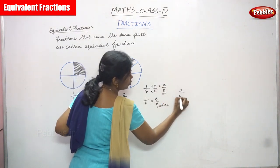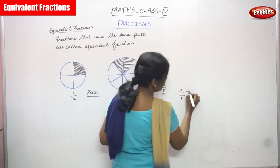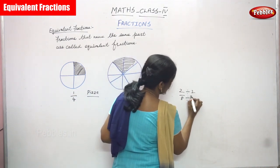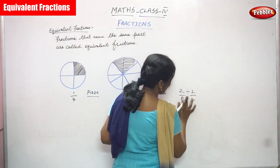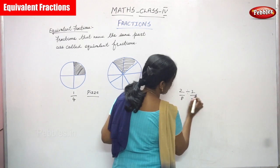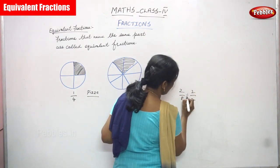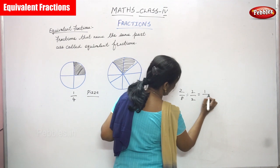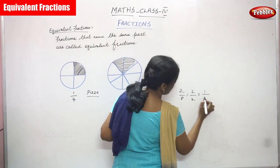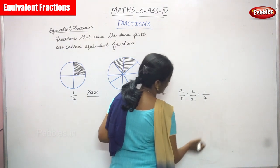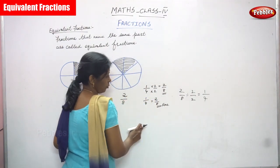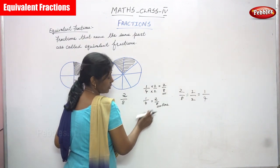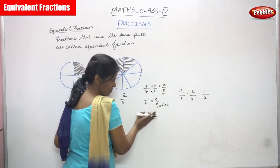At the same time, two by eight divided by two: two divided by two gives you one, and eight divided by two gives you four. So again you get one by four. Therefore, one by four is equal to two by eight — both are similar.